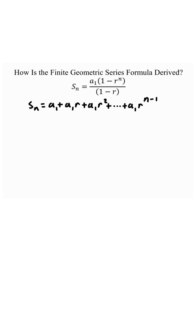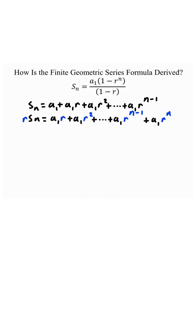Let's multiply everything, both sides, by the common ratio r. So we have r times S of n equals a sub 1 r plus a sub 1 r squared, and so on, all the way down to a sub 1 times r to the power of n minus 1, plus a sub 1 times r to the power of n.